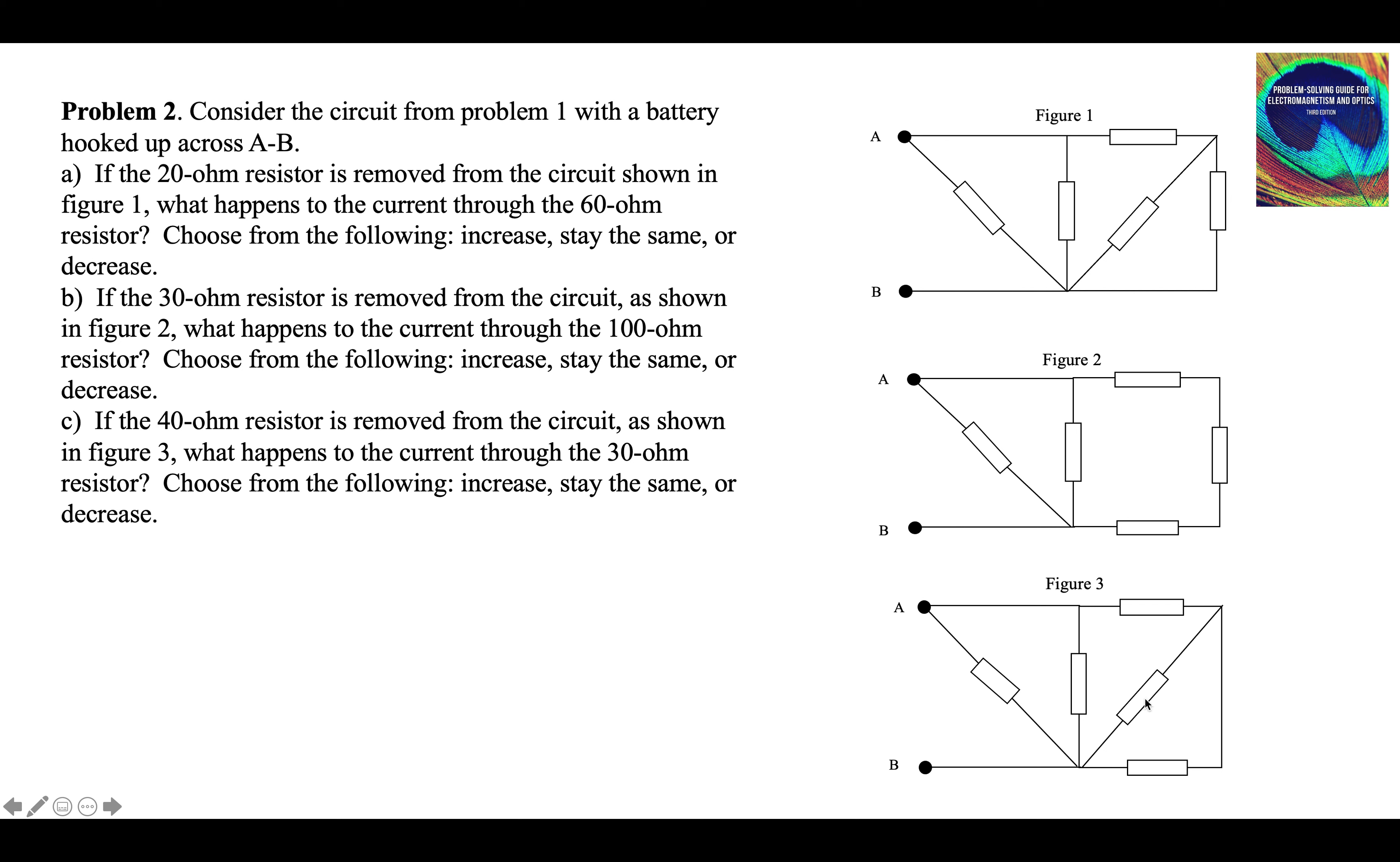Let's label the resistors we want to calculate the current through. There's the 60 right here. Here's the 100 after we take away the 30. And here's the 30 after we take away the 40. Let's focus on these one at a time, starting with Part A.